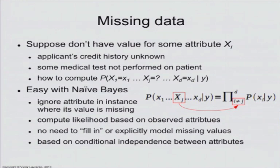What you do is you just skip that attribute for that instance. So if I don't know Xj, then my product goes over all attributes except for Xj. So I just skip it from the product.